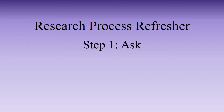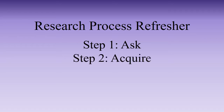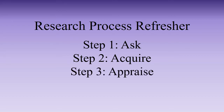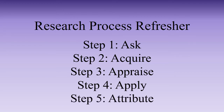Step 1: Ask. Write down questions you have about your topic. Step 2: Acquire. Find information to answer your questions. Step 3: Appraise. Decide if the information you have is reliable. Step 4: Apply. Write your paper. Step 5: Attribute. Tell everyone where you got your information from.